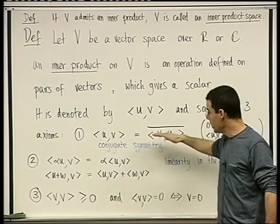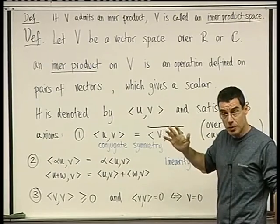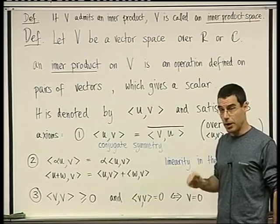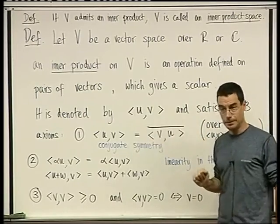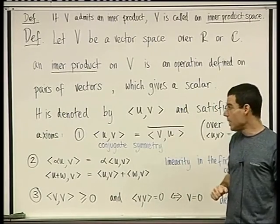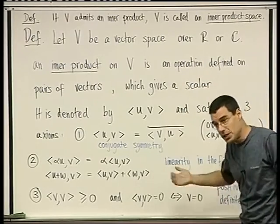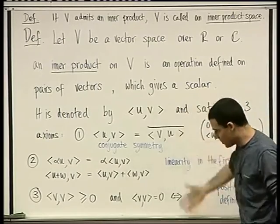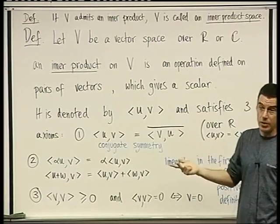That's an inner product on a vector space of square matrices. For R^n, the inner product is just the sum of the products of the components — the inner product of V and U is the sum of U_i V_i. What we haven't seen, and that's what we want to discuss now, is how does this notion of an inner product produce geometry — how from this do we get lengths, distances, and angles?